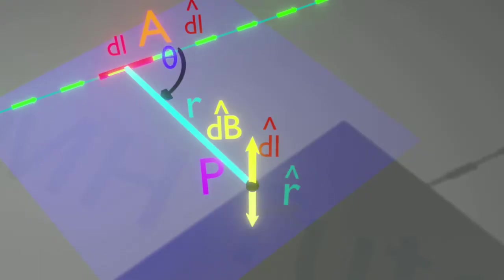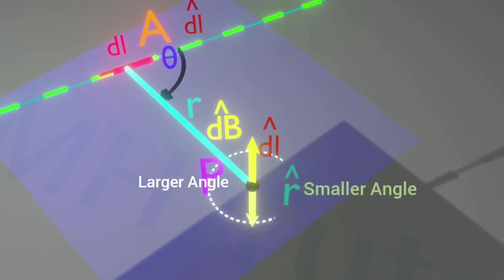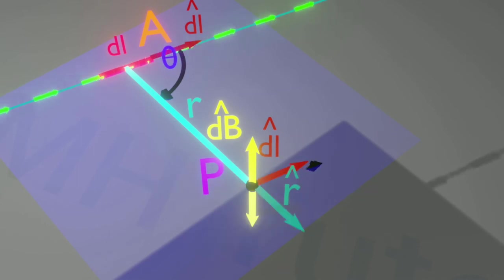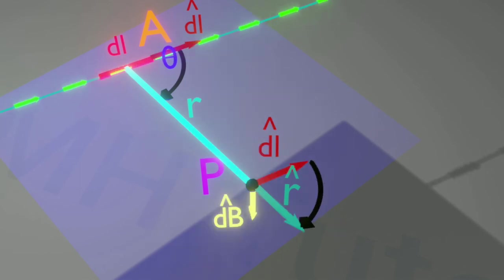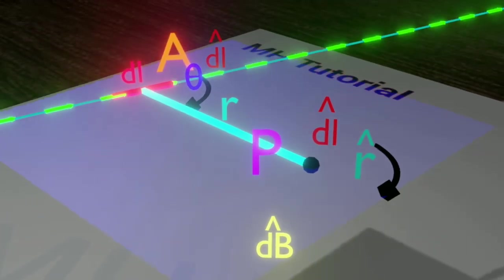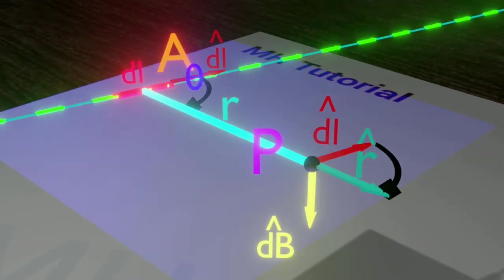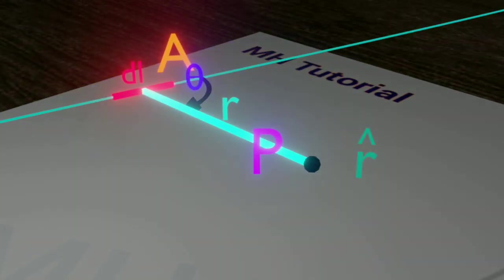Actually, two angles are there between the vectors DL and R. One of them is smaller and a larger another one. We are to move through the smaller angle. Hence, we get a clockwise rotation here. Thus, the direction of this product vector is downward. Now let's change the direction of the electric current.